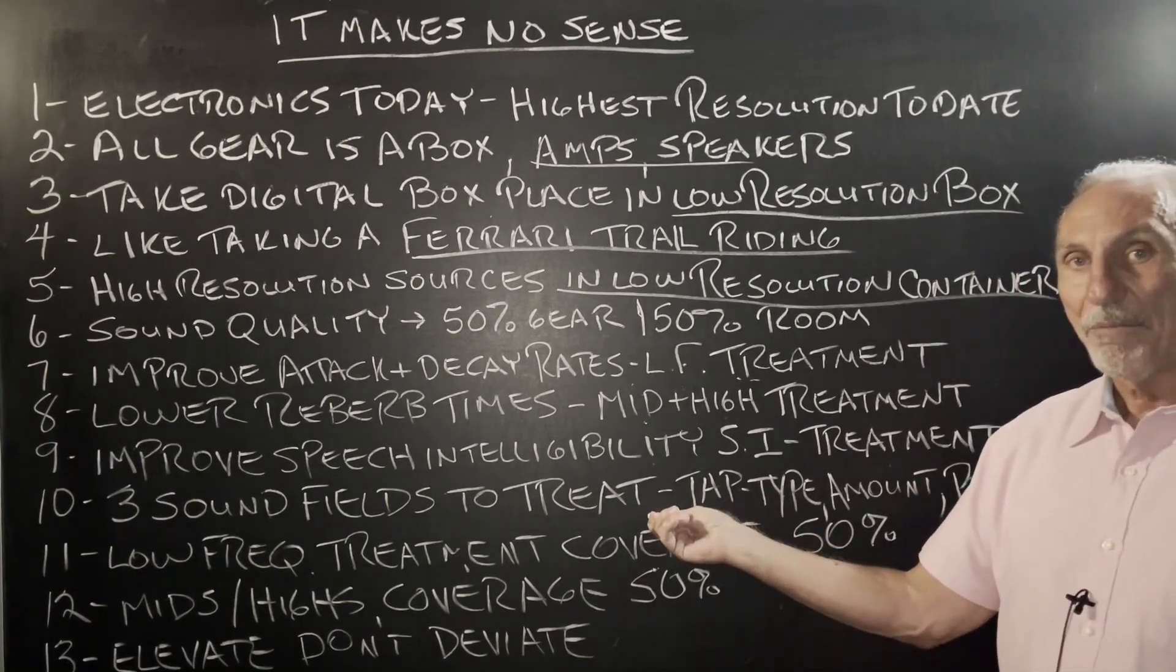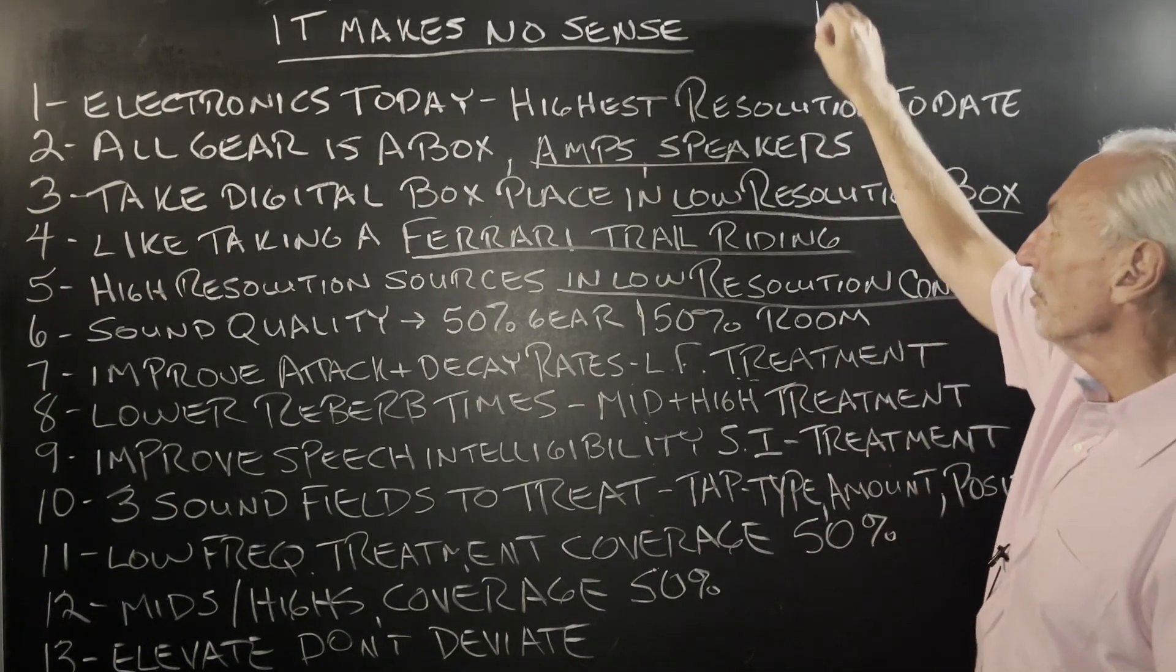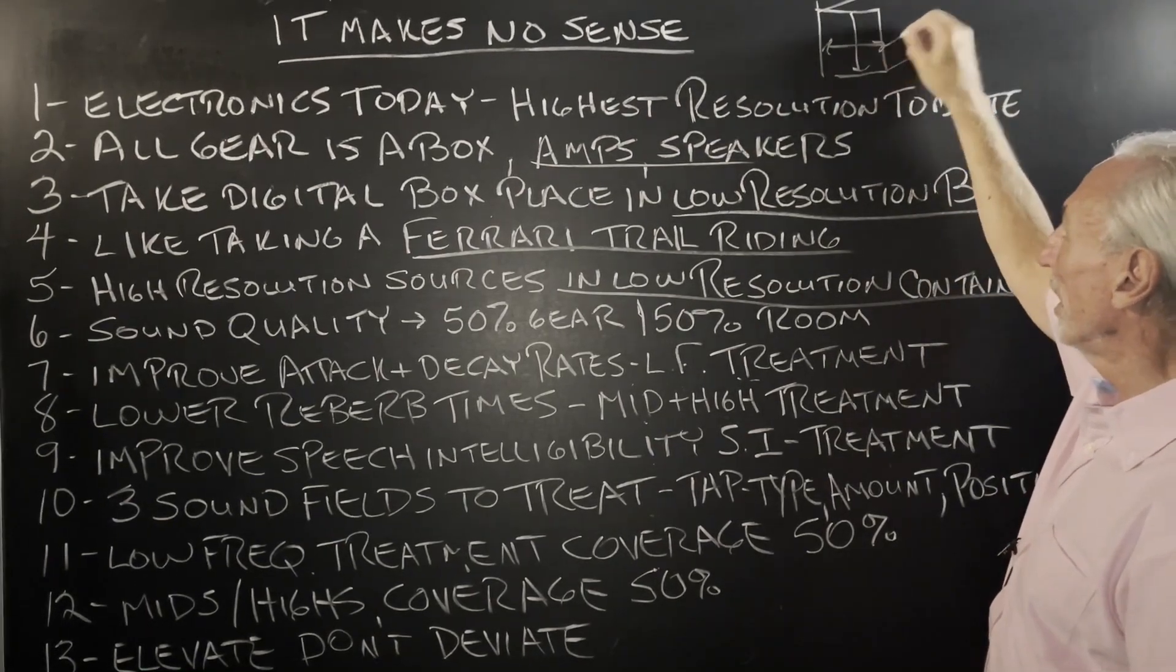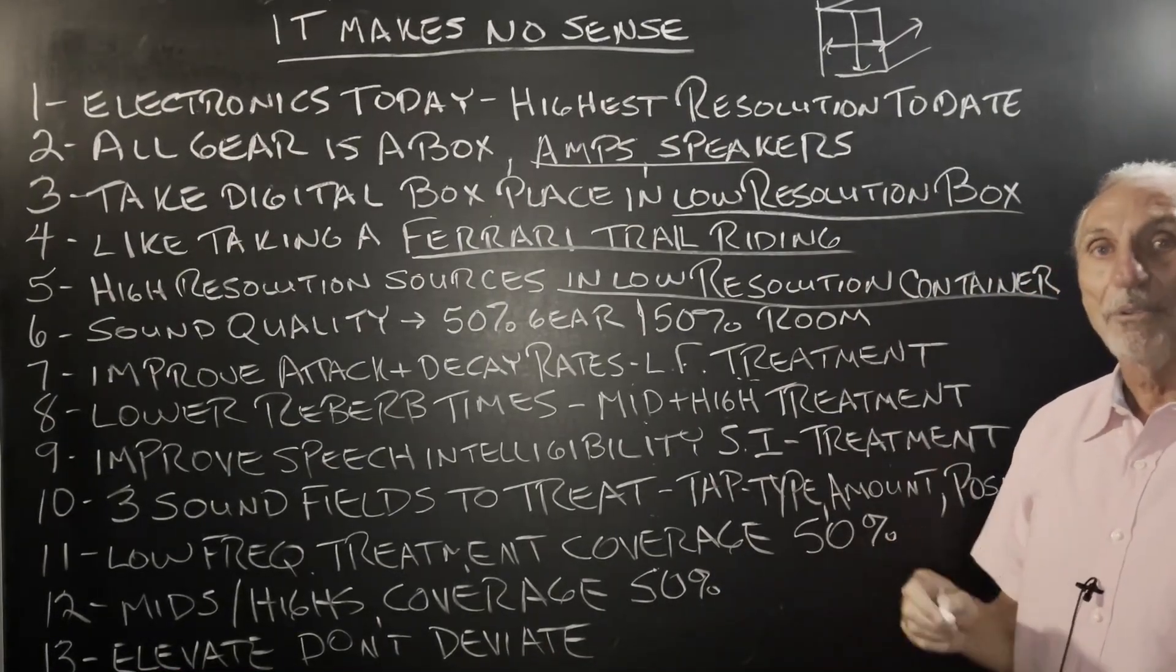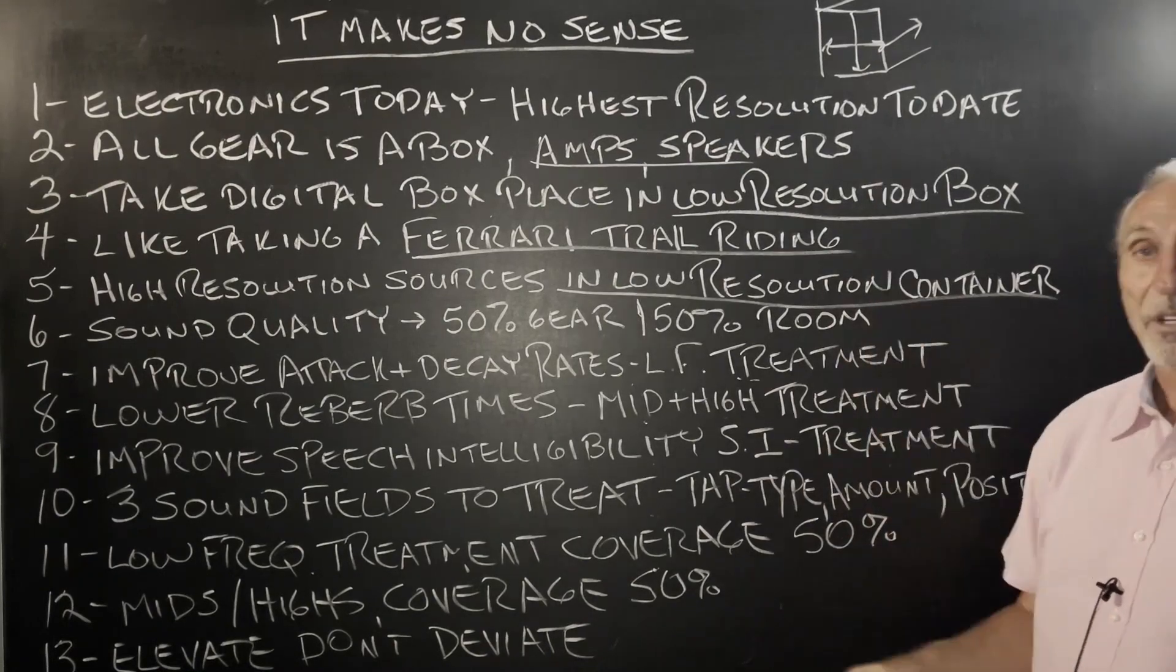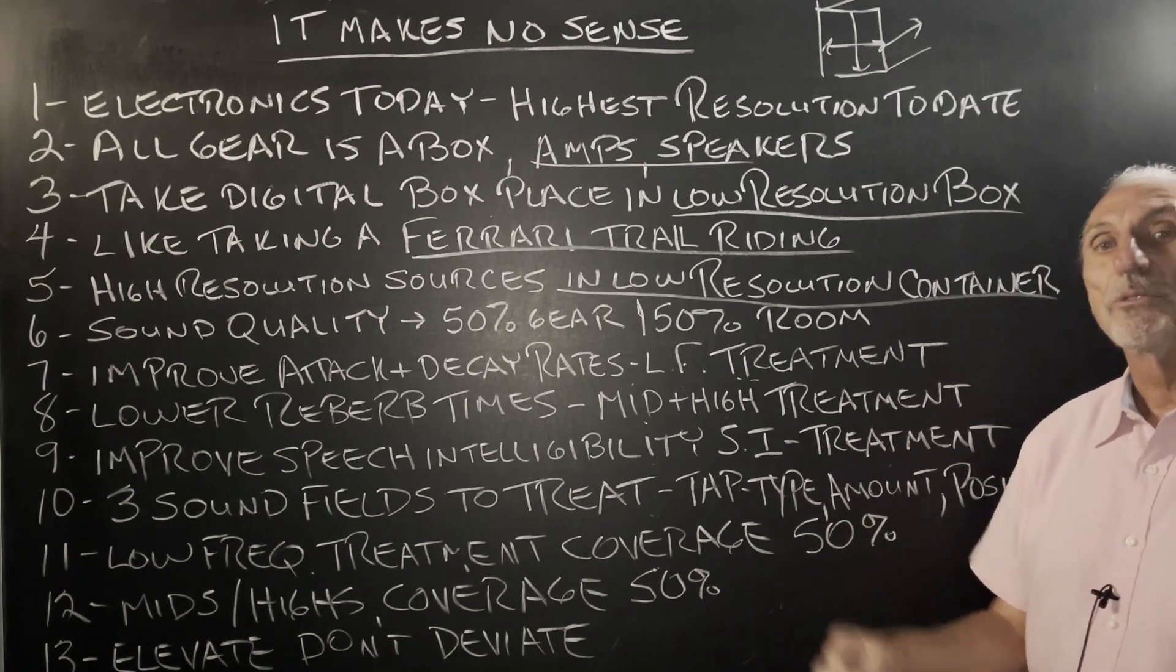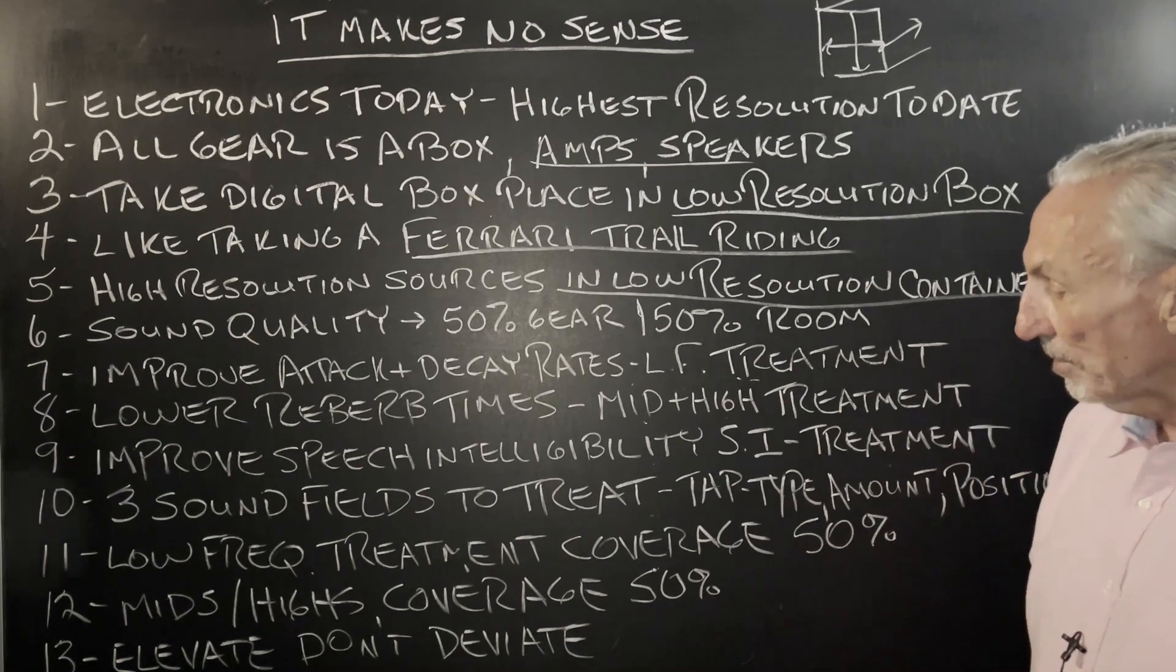We've got three sound fields to treat, and a lot of people don't understand that, and that's very important. Remember, we've got width, we've got height, and we've got length, right? So we have three sound fields, and to compound all of these problems, each of these sound fields has a different frequency and amplitude of problem. So we have to assign the appropriate treatment to those areas of the room that have those frequency and amplitude of problems.